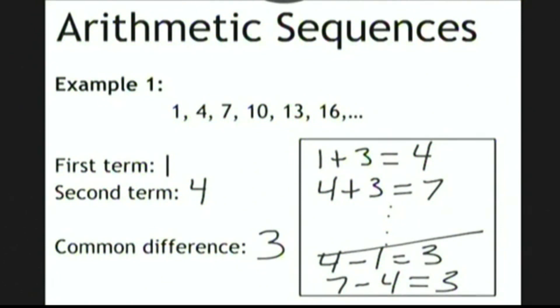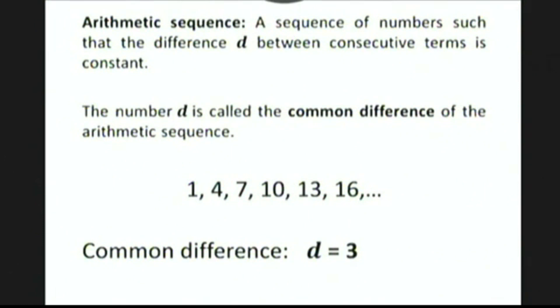Whenever you subtract one term from the next term, you always get the same number. And once again, that's called the common difference. So an arithmetic sequence is a sequence of numbers such that the difference d between consecutive terms is constant, and the number d is called the common difference.